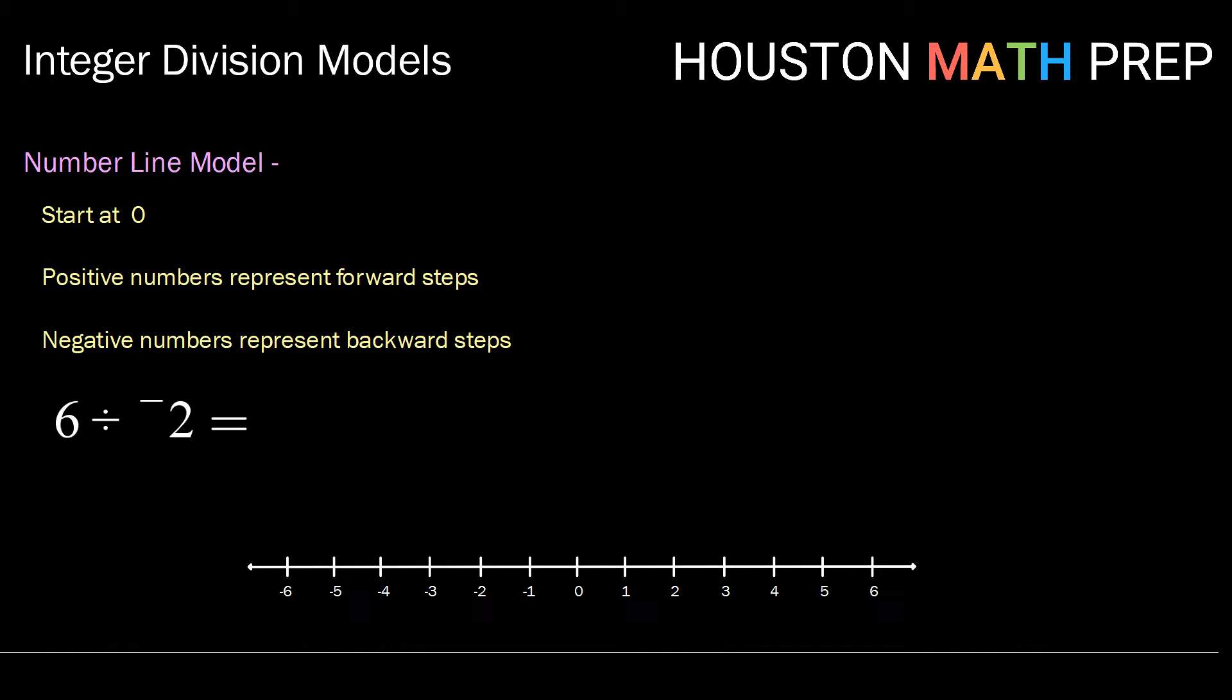If we take six divided by negative two, we're going to start at zero. We're going to note that we need to make it to positive six. So whatever number you're dividing by, that's your destination. Next, you're going to think about, well, what kind of steps do I need to take? Because I have negative two, I need to take backward steps. So the only way to get to six by taking backward steps is to flip around.